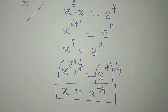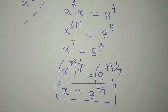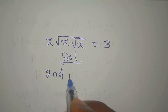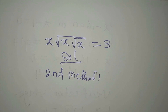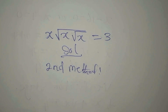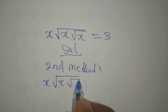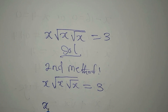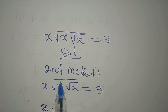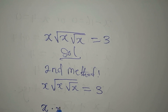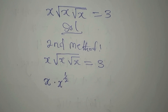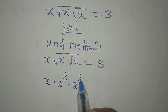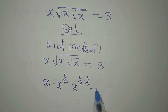Now let's go to the second method. It will be left for you to see which one is easier. We have x times the square root of x times the square root of x equals 3. This can be written as x multiplied by x to the power of 1 over 2, then multiplied by x to the power of 1 over 2 times 1 over 2, which is 1 over 4, all equal to 3.